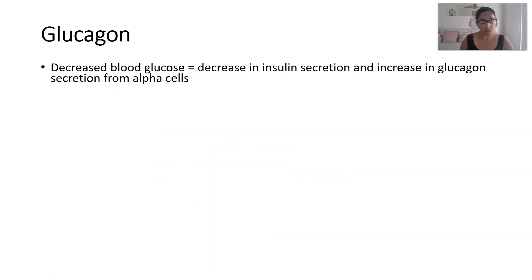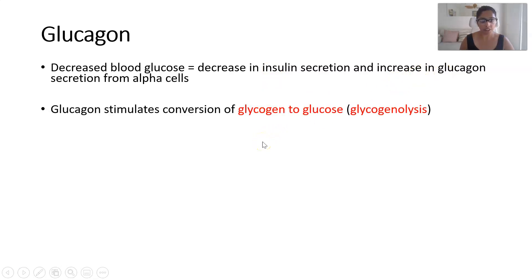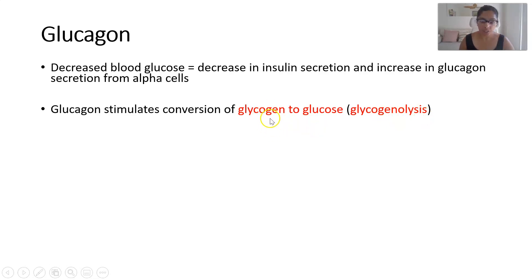If we look at the antagonist of insulin, that's glucagon. To raise blood glucose levels, we would stop secreting so much insulin and increase the production of glucagon from the alpha cells in the pancreas. Glucagon will stimulate the conversion of glycogen to glucose — splitting up glycogen. To split up something means lysis, so glycogenolysis is the breakdown of that large glycogen molecule, probably stored in the liver and skeletal muscle, breaking it down to glucose so these molecules are small enough to exit those cells and enter the bloodstream.